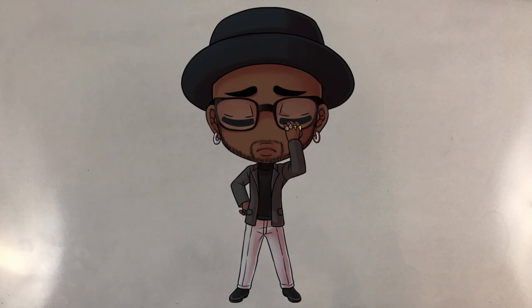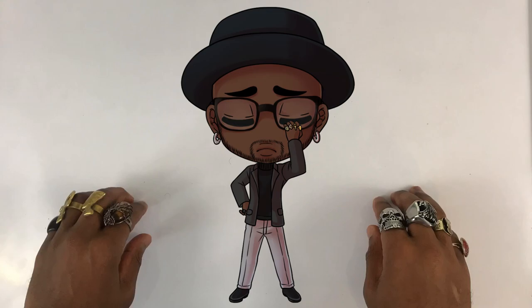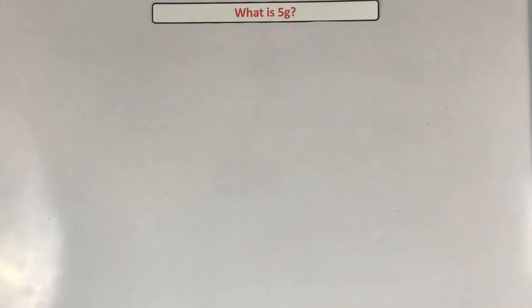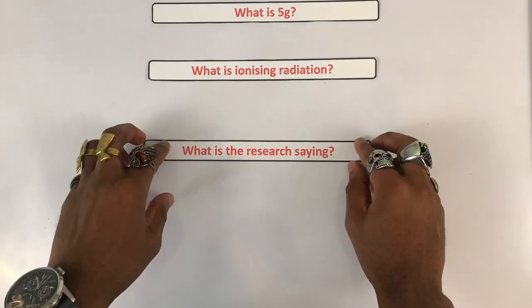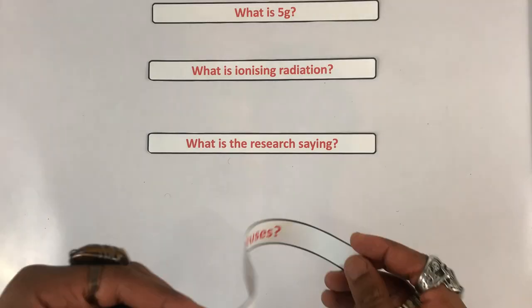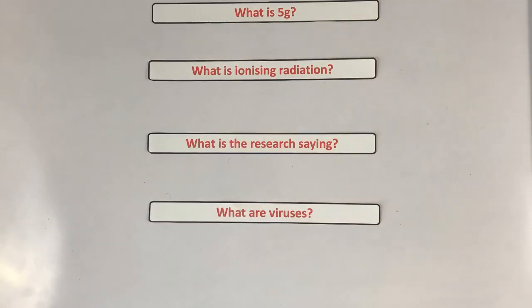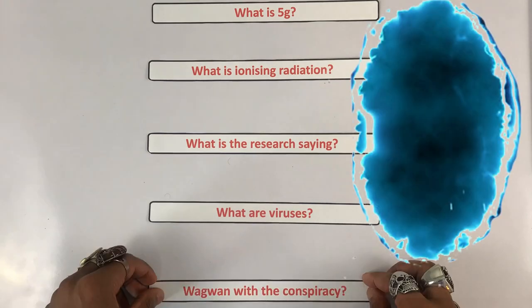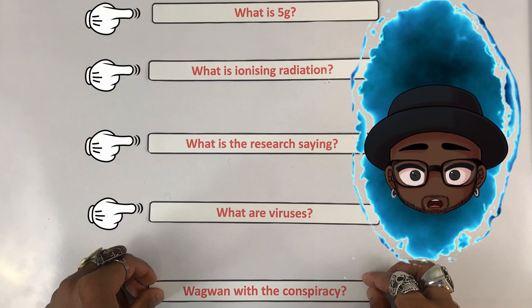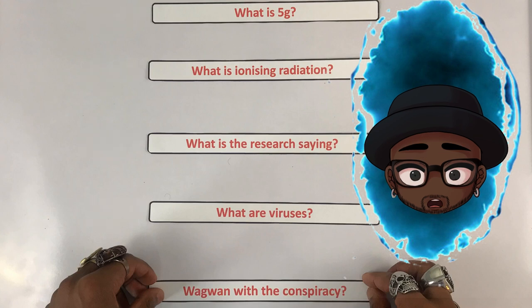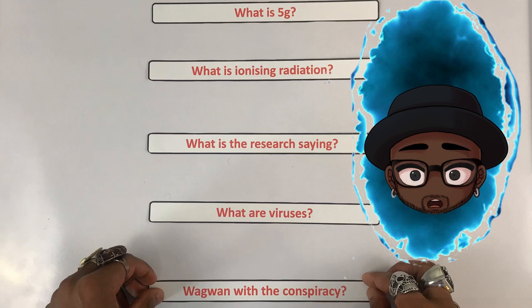Okay, I'll break this video into five parts: what is 5G, what is ionizing radiation, what is the research saying, what are viruses, and then where are we going with this conspiracy theory. This video ended up being really long, so I'll touch the first four parts in this video and then in the next video I'll take apart that conspiracy theory.